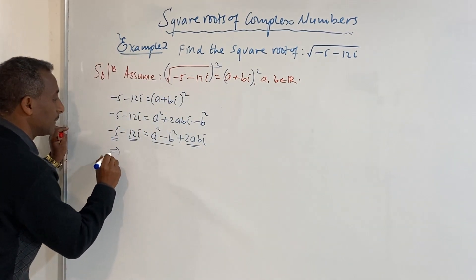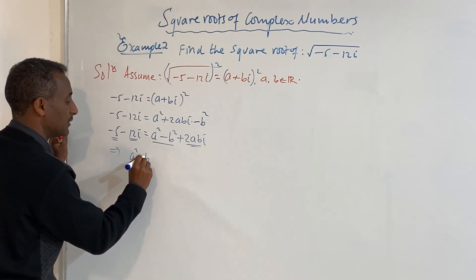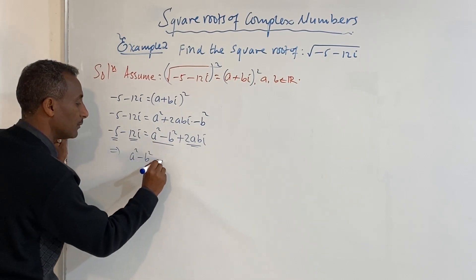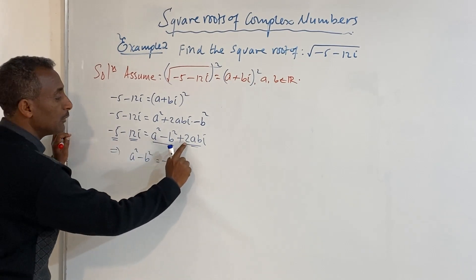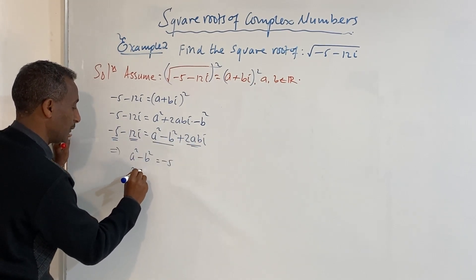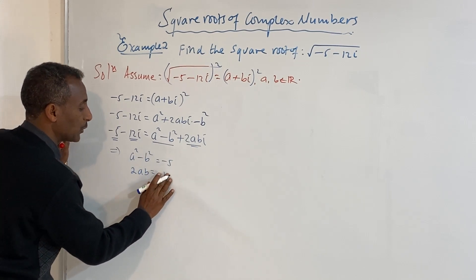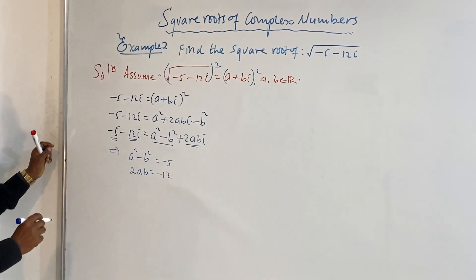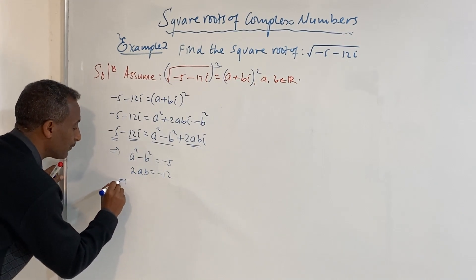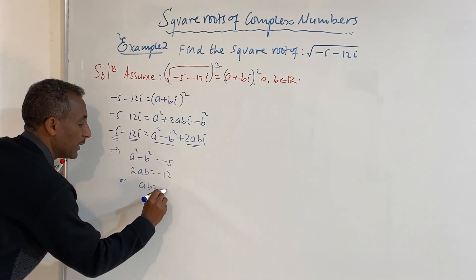Applying this, the real part gives us: a squared minus b squared is equal to minus 5. And the imaginary part gives us: 2ab is equal to minus 12, which simplifies to ab equals minus 6.